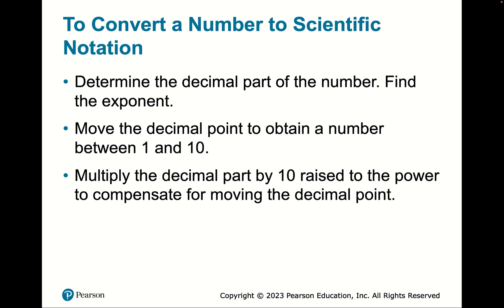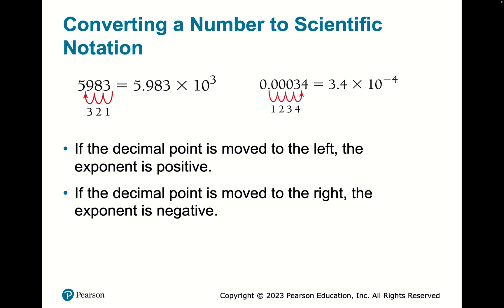To change a number to scientific notation, look at the first digit, start with the base unit, and count up or down to find the exponent. For example, 5,983 — start with 5 and move three spots over, so it becomes 5.983 × 10³. For 0.00034, start with 3.4 and move four spots, giving 3.4 × 10⁻⁴.